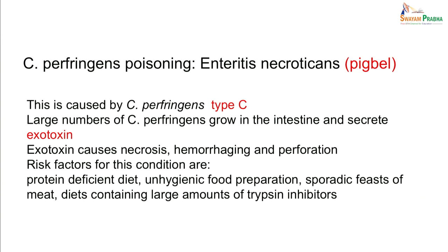Clostridium perfringens also produces another foodborne illness known as enteritis necroticans or pig-bel, caused by type C strains. Large numbers of C. perfringens grow in the intestine and secrete exotoxin, causing necrosis, haemorrhaging, and perforation. Risk factors include protein-deficient diet, food cooked under unhygienic conditions, sporadic feasts on high-protein meat, and a diet containing large amounts of trypsin inhibitors.